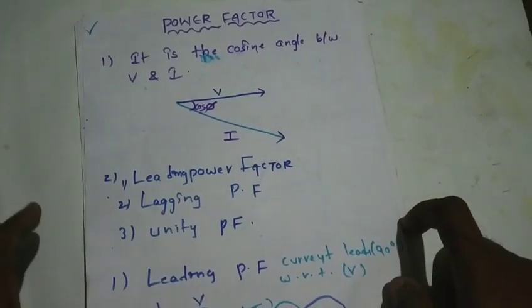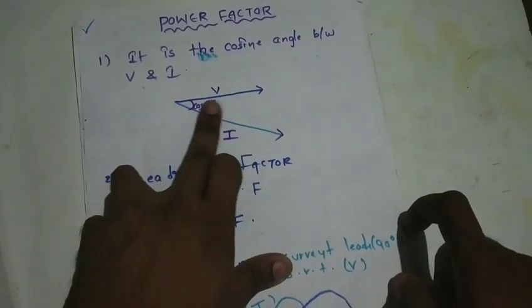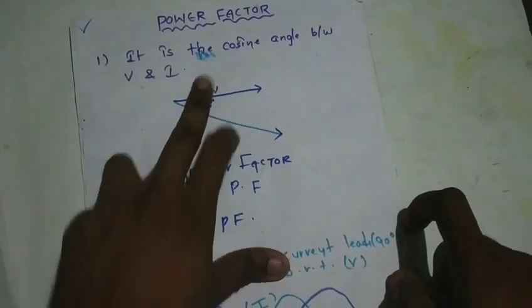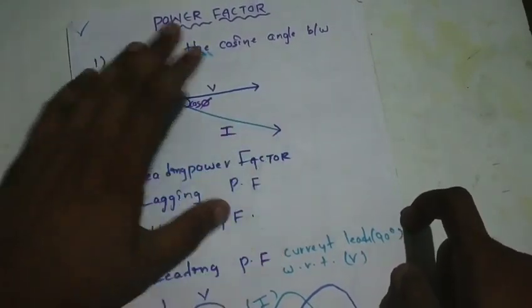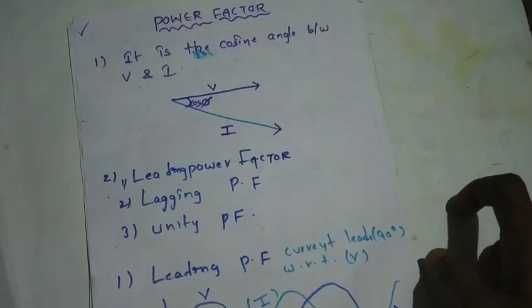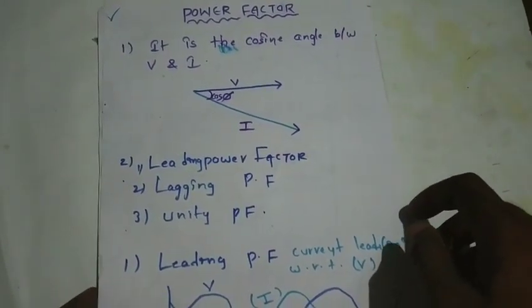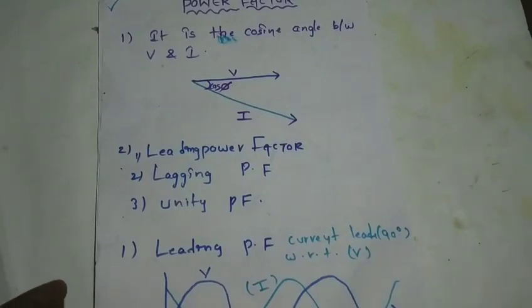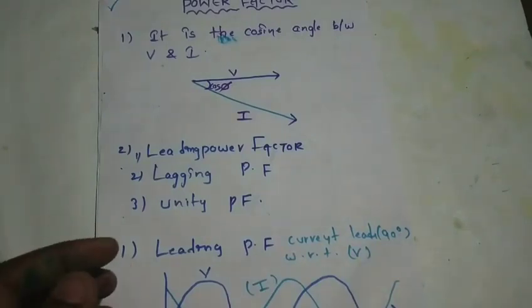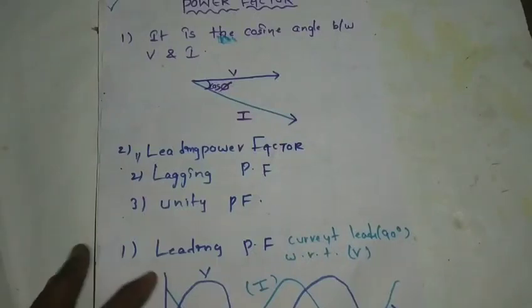So, what is the power factor? The power factor is the cosine of the angle between the voltage and the current.